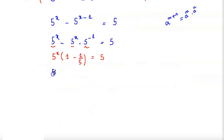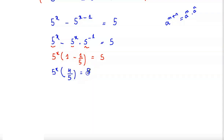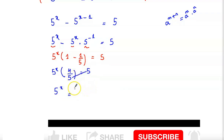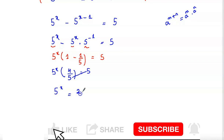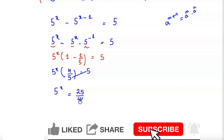So 5 to the power x equals 5 times 5 over 4, which gives us 5 to the power x equals 25 over 4. Now to find x,